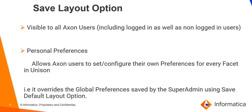Next, save layout option. This option is visible to all Axon users, that is logged in as well as non logged in users. This feature allows Axon users to set their own preferences for every facet in unison grid, also known as personal preferences. That is, it allows users to override the global preferences saved by the super admin using the save default layout option.